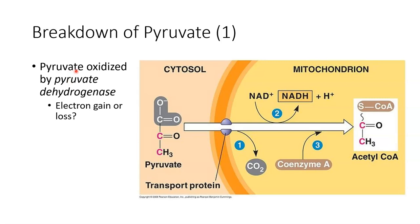There is an enzyme involved in this process: pyruvate gets oxidized by pyruvate dehydrogenase. Notice it ends in '-ase' and the pyruvate is oxidized. Think about this — if it's oxidized, does that mean it lost an electron or gained an electron? That's a great question to consider.